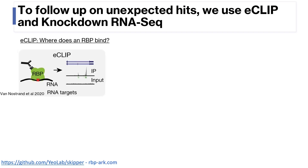Eclipse is a very powerful technique that our lab pioneered to investigate the binding sites of an RBP. In Eclipse, we apply UV radiation to create a covalent bond between RBPs and nearby RNAs, then pull down our RBP with an antibody and sequence the RNA that comes along with it. Understanding the RNA acquired from this method to infer RBP binding is also a computational challenge, and for this analysis we turned to our lab's recently developed and published skipper pipeline, which anyone can play around with at rbp-arc.com.